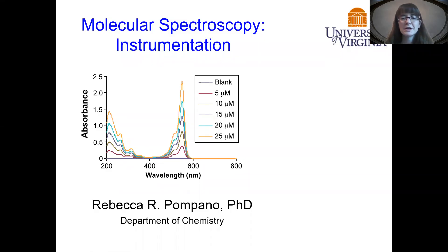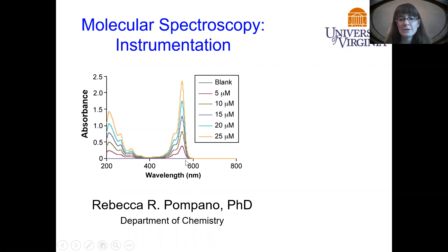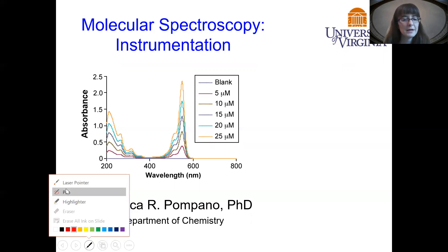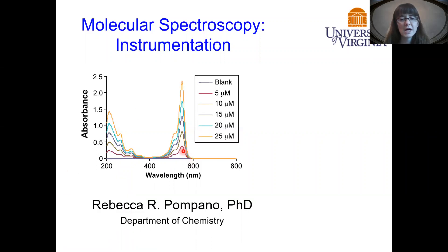Hello, today we're going to be talking about the type of instrumentation that it takes to measure a UV-vis absorbance spectrum. Shown here is a sample spectrum for an analyte that absorbs both in the deep UV range at less than 300 nanometers and in the visible range between 500 and 600 nanometers. We can also see quantitatively the difference in absorbance as we increase the concentration of the analyte, ranging from 5 micromolar up to 25 micromolar.